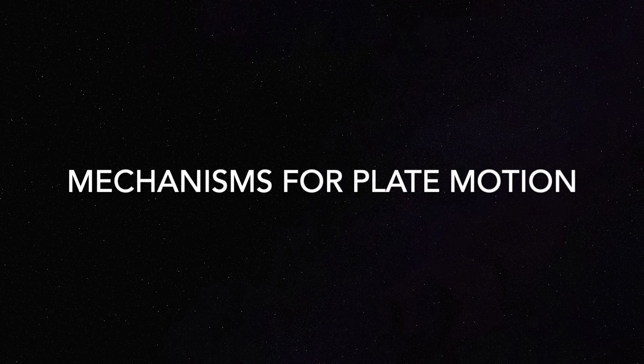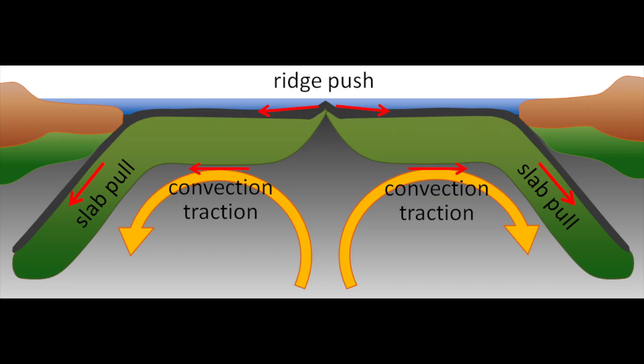Mechanisms for plate motion. It is widely believed that ridge push and slab pull are the main mechanisms for plate motion, as opposed to traction by mantle convection. Mantle convection is a key factor for producing the conditions necessary for ridge push and slab pull.